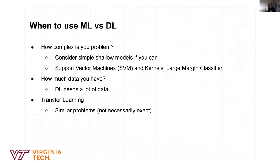When deciding whether to use machine learning versus deep learning: first it depends on how complex your problem is — there are simpler models like support vector machines that can solve your problem. It also depends on how much data you have. Even if you have a small amount of data but a complex problem, you may need deep learning, which means you'll need to bring in more data. Always think about transfer learning because it will save you a lot of time and effort in collecting data.